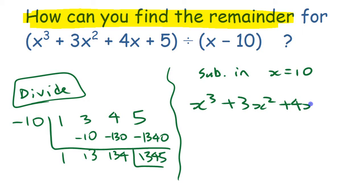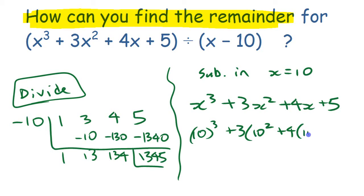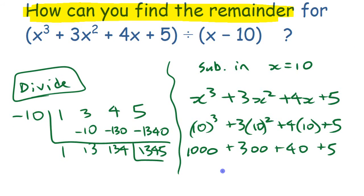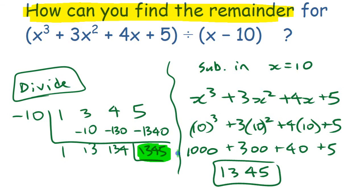We have x cubed plus 4x plus 5. If we substitute x equals 10 in, we have 10 to the third plus 3 times 10 squared plus 4 times 10 plus 5. We have 1000 plus 300 plus 40 plus 5. That works out to 1345. I'm sure you've already recognized that that happens to be the same number as the remainder we got before.